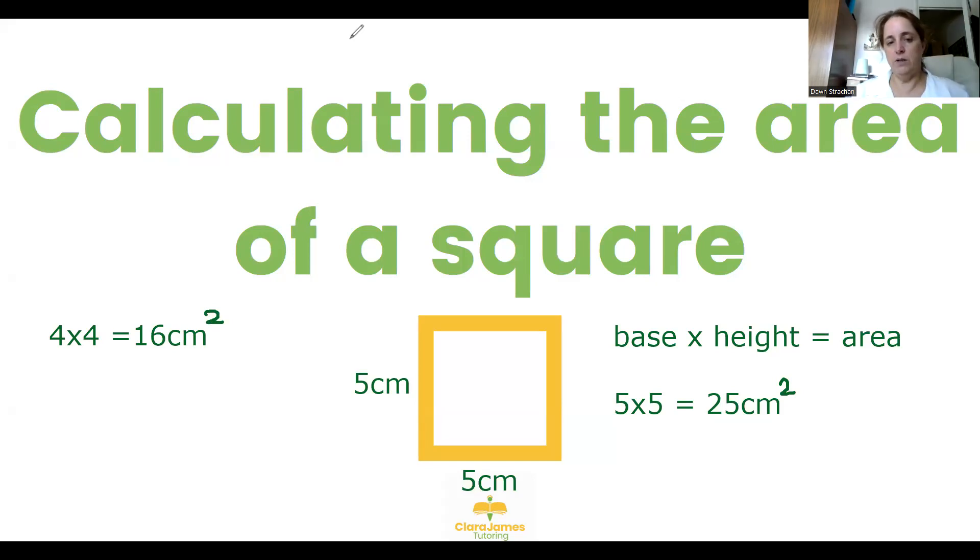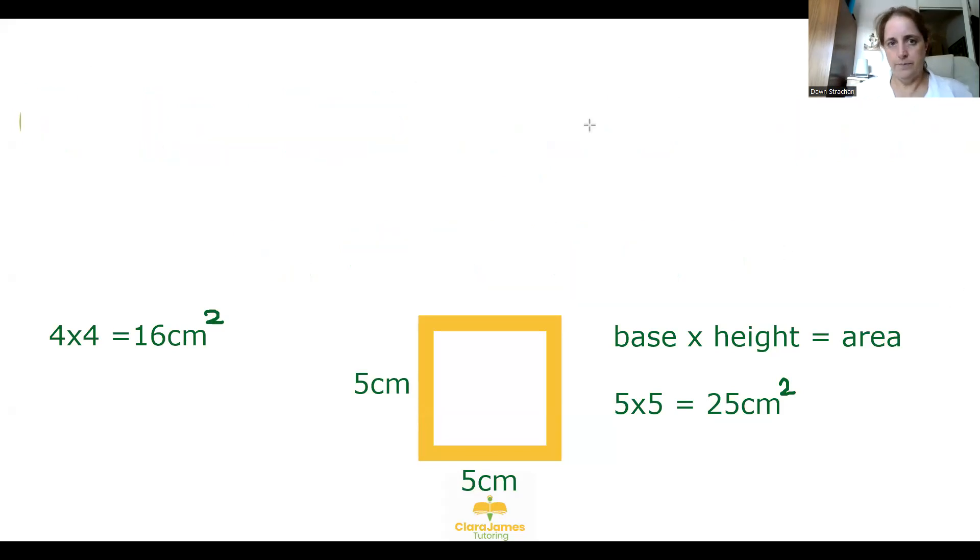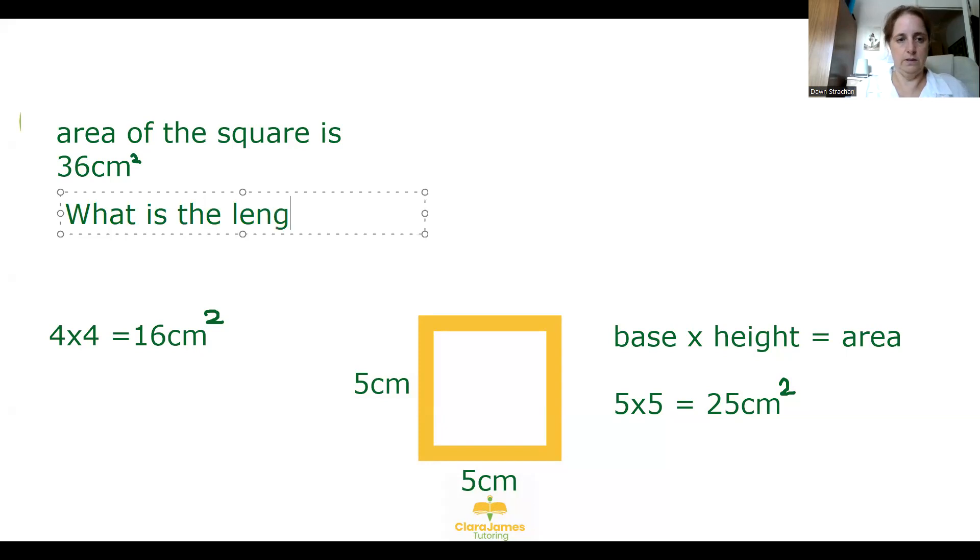Or the other thing they may do is they may tell us that the area of our square is, let's say 36 centimeters squared. And then they may ask us what is the length of one side. To work this out, what we need to do is square root the area. So in this instance, square root 36.